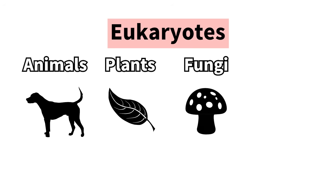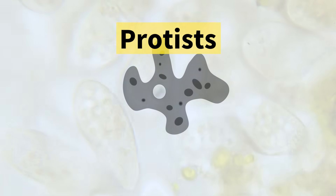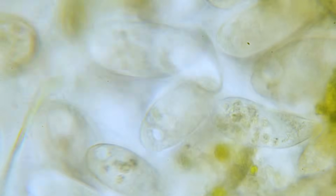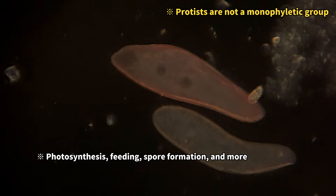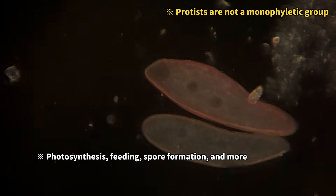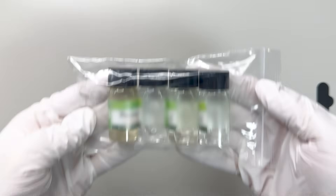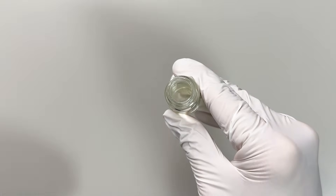However, among the eukaryotes, there are some organisms that don't neatly fit into these familiar categories. These are called protists. Most protists are single-celled organisms with simple body structures, and they display a wide variety of unique lifestyles. So this time, to show you real protists in action, we've purchased live protists for observation. First up is the amoeba.